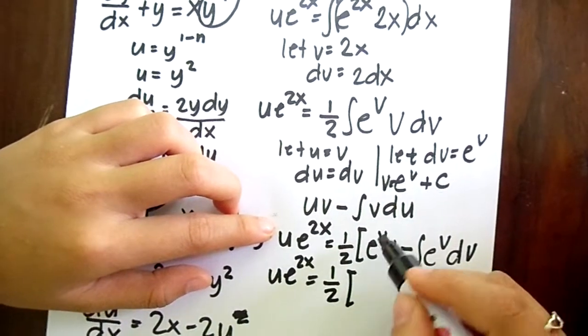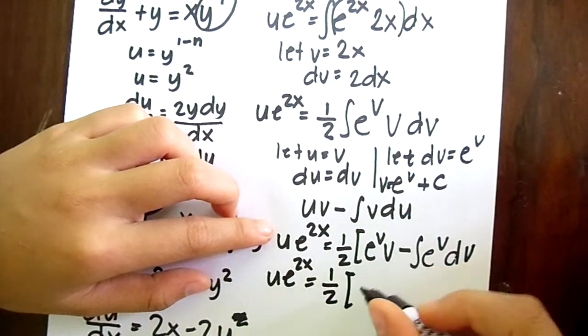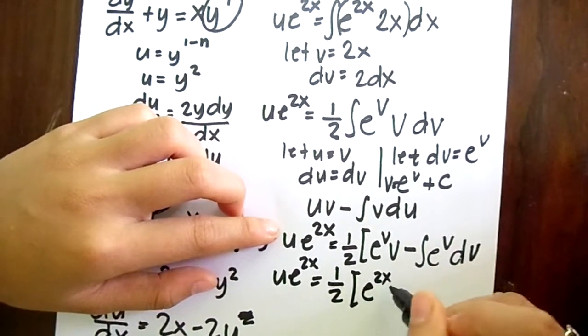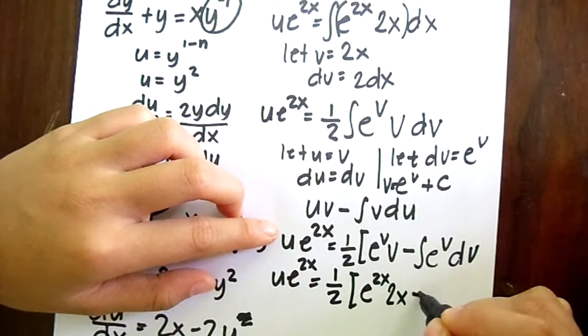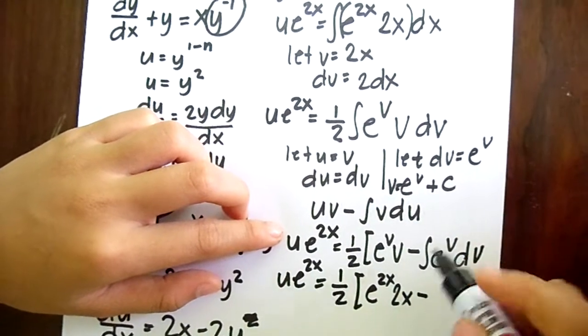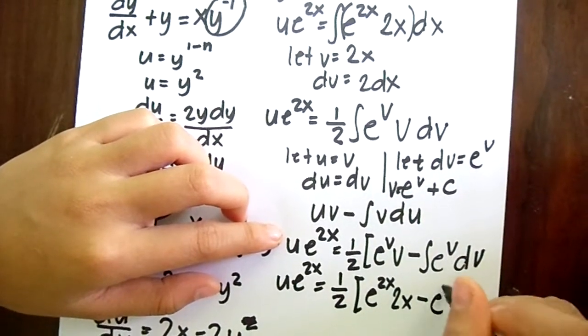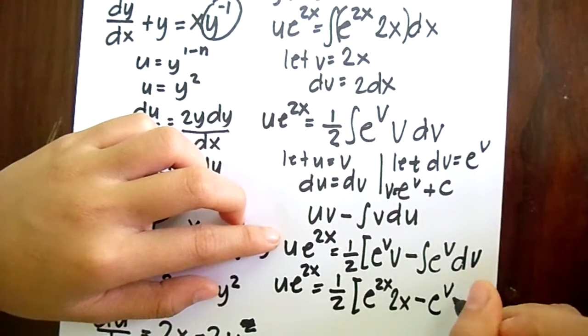Which is equal to, our v here is equal to 2x, so it becomes e to the 2x times 2x minus integral of e to the v dv is just e to the v plus c.